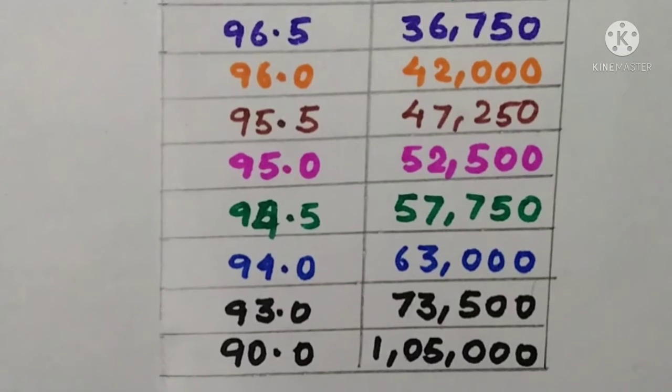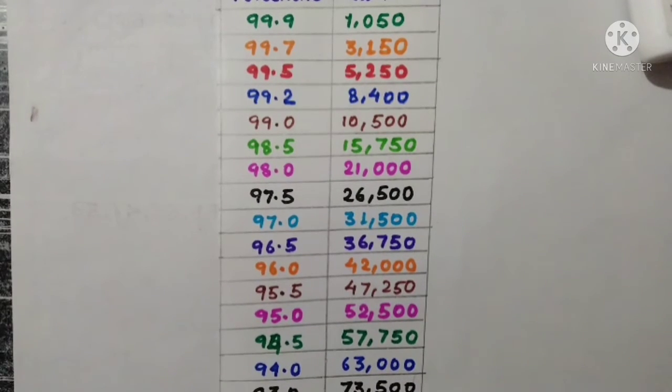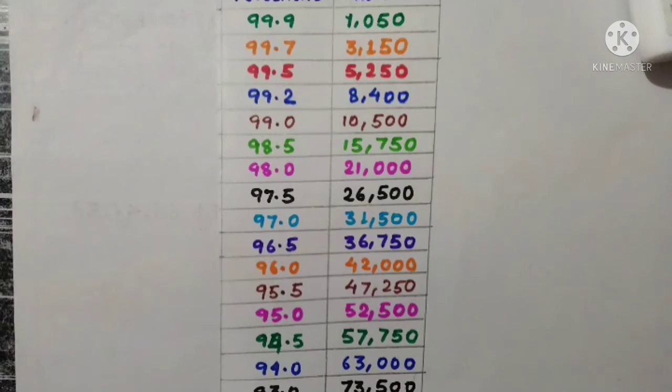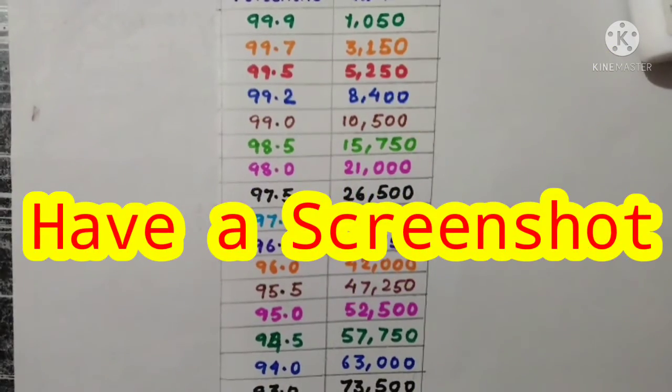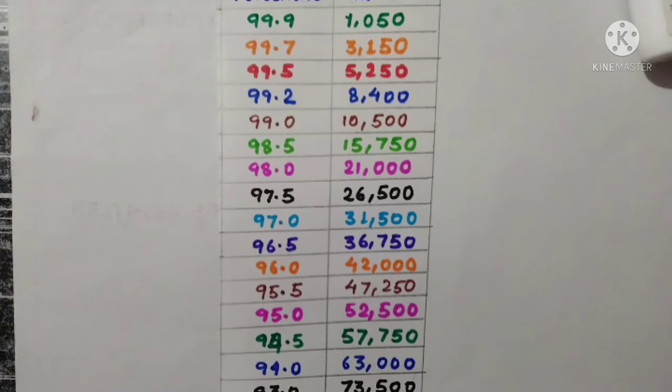But there is a very less chance of your admission in NITs. You will get very low branch in a lower NIT or you can get triple IITs and GFTI. So this is a tabular form of percentile versus rank and I hope that in this 2021 JEE Main this will be the most accurate rank for a particular percentile.